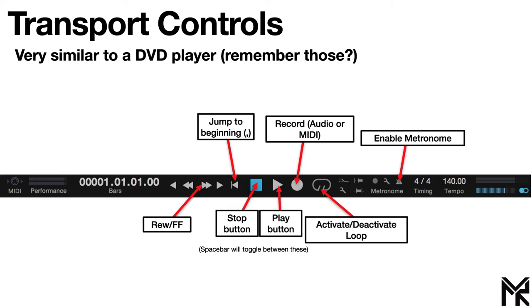Then you have this button over here which will enable the metronome, so it acts like a click track while you're recording. The little wrench icon next to it allows you to edit the metronome settings — how loud it is and what type of sound it is.